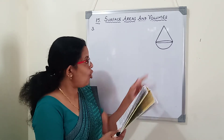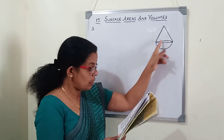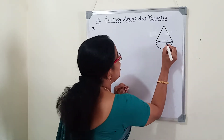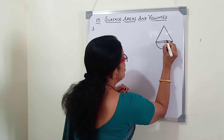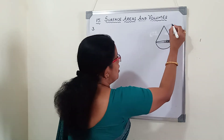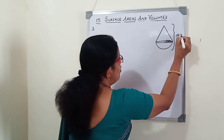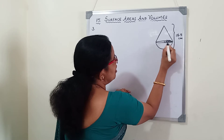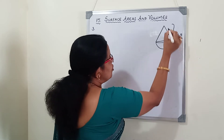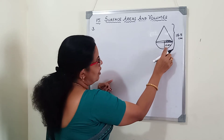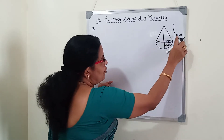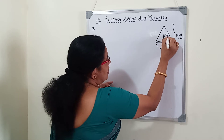The toy is in the form of a cone mounted on a hemisphere, so on top of the hemisphere there is a cone. The radius of the cone and hemisphere is both 3.5 cm. The total height of the toy is 15.5 cm. Since the radius of the hemisphere is 3.5 cm, we need to find the height of the cone.